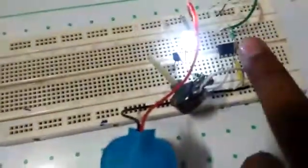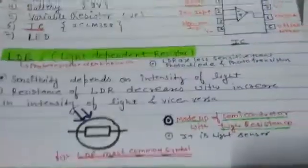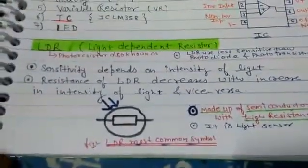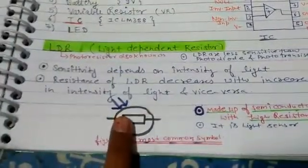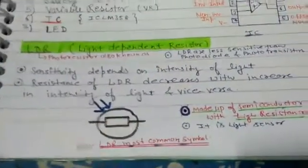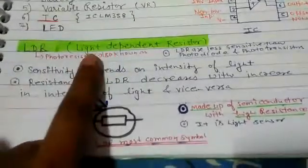I am showing in this circuit this is LDR. The LDR full form is Light Dependent Resistor. What is the meaning of light dependent resistor?